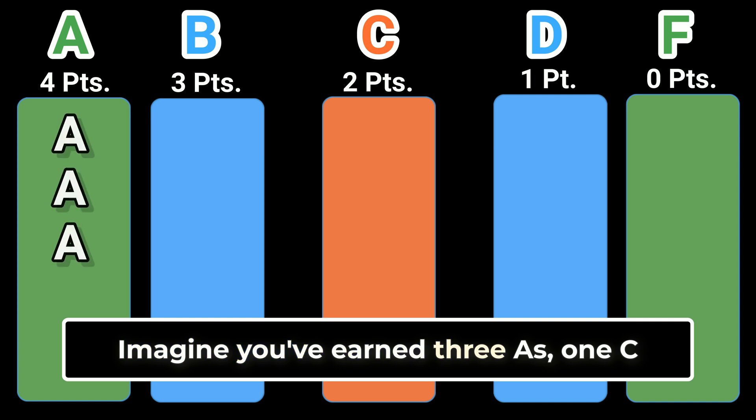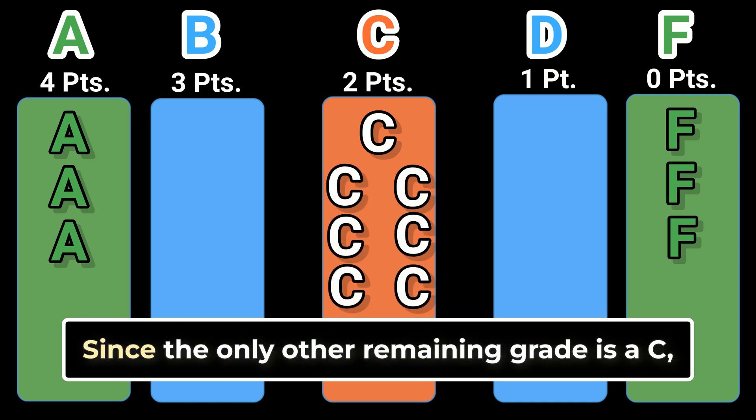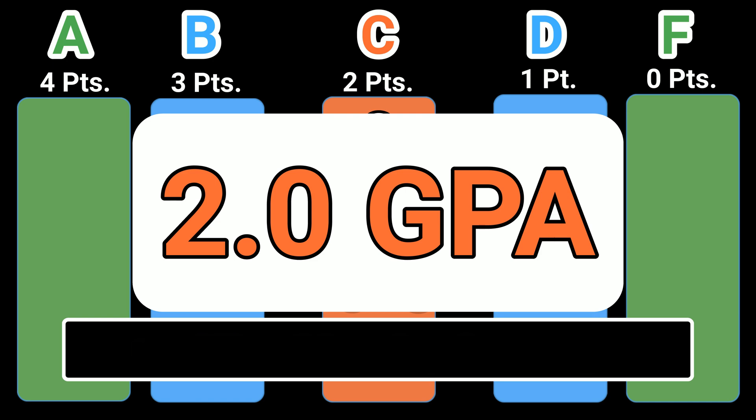Imagine you've earned three A's, one C, and three F's. The three A's and the three F's average out to C's. Since the only other remaining grade is a C, it's like you've earned straight C's which would be a 2.0 grade point average.